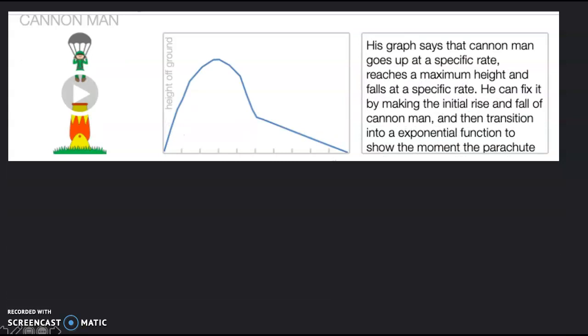This next one, again, has the parabola going upside down. Once the parachute hits, then it just begins to decrease at a slow decreasing rate.